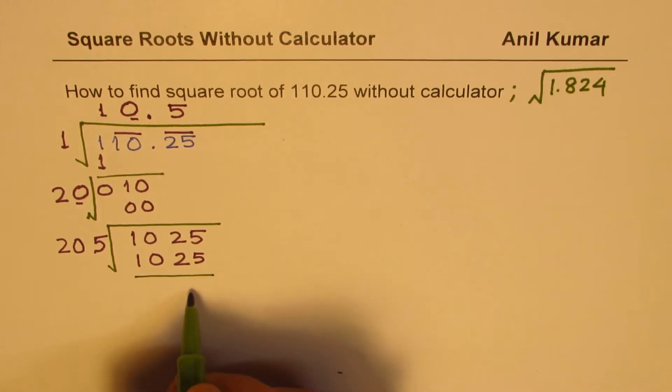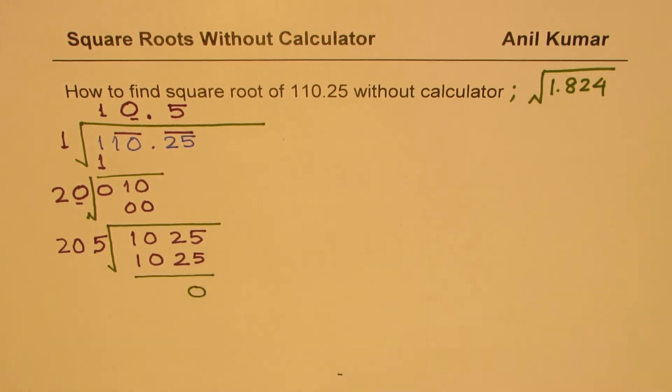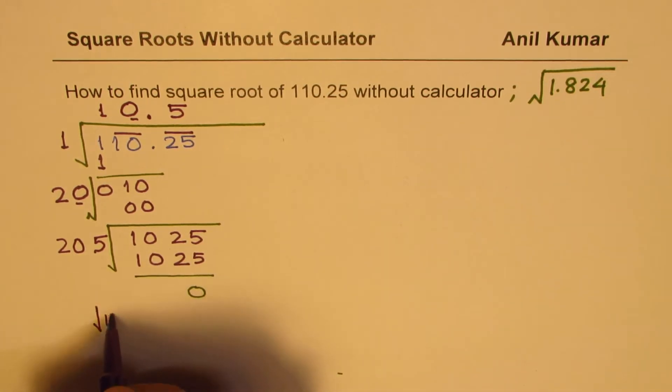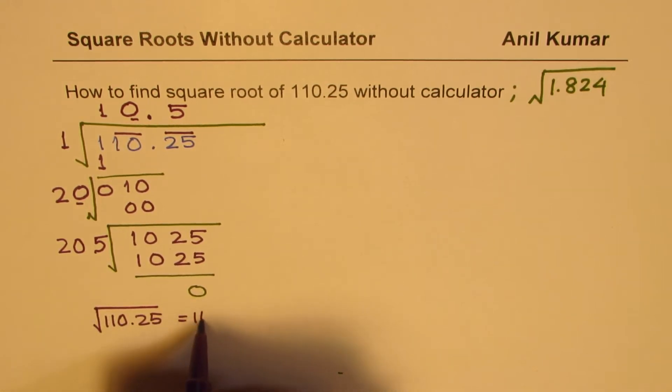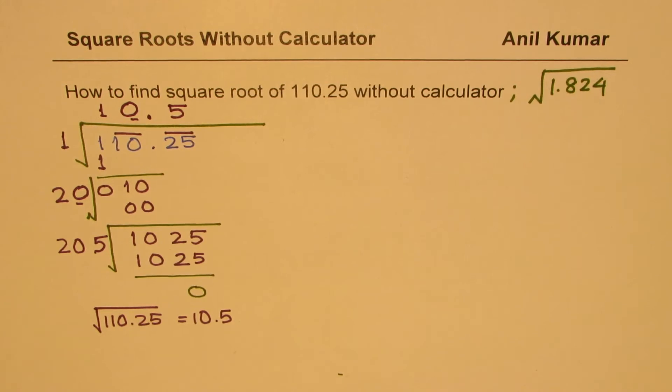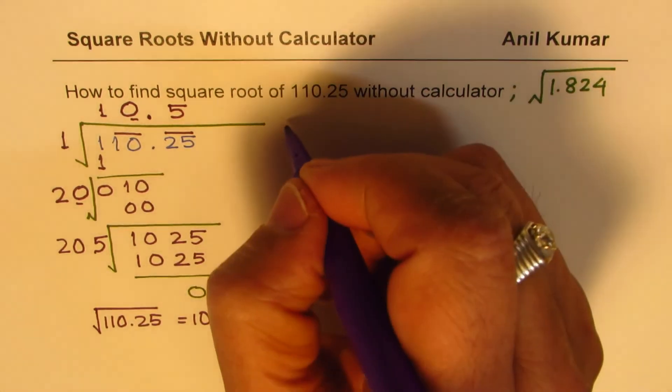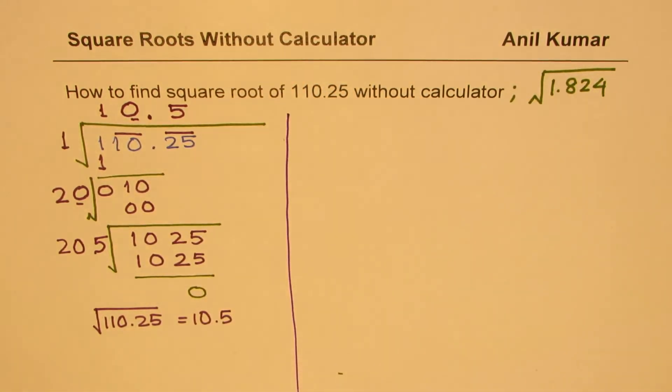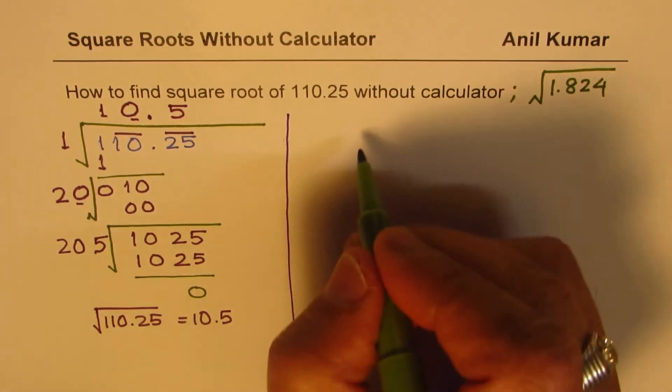Remainder in this particular case is 0. So we found exact square root. So we know that the square root of 110.25 is equal to 10.5. Now let's take up the second example. I hope you have understood these steps. I will repeat these steps once again so that you clearly understand the method. Now we will do square root of 1.824.